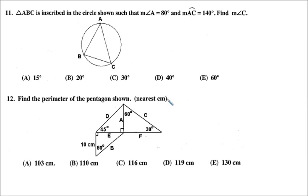Number 11. Triangle ABC is inscribed in the circle shown such that the measurement of angle A is 80 degrees and the measurement of arc AC is 140 degrees. Find the measurement of angle C. In geometry problems, it's a good idea to just start labeling things. The measurement of angle A is 80 degrees. Highlight the arc AC.